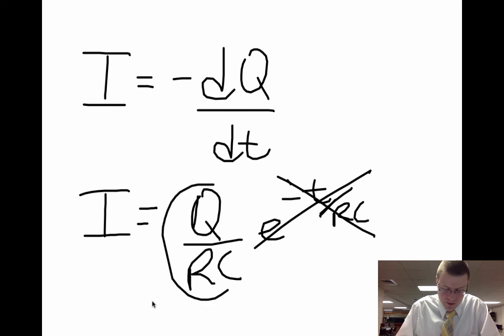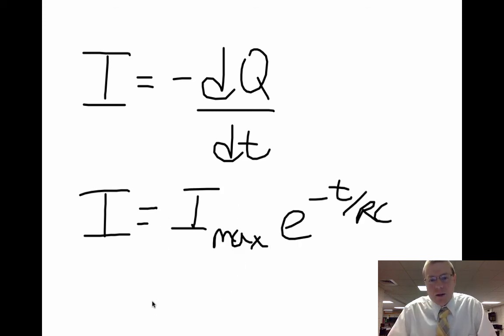So I could rearrange this one more time and leave it as the maximum current, e to the minus T over RC. That would be the current changing as time goes on once the switch is closed.